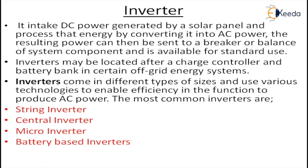Next is the inverter. All loads connected in systems are usually AC loads, but a solar PV system produces DC. So we require one conversion — DC to AC — which is done by the inverter. The inverter is always located after the charge controller and battery bank in an off-grid energy system. It is not situated on the roof; it is in a closed room, so IP protection is rated accordingly. There are many types of inverters: string inverter, central inverter, micro inverter, battery-based inverter, and now even nano inverters, which are placed at the back of the panel.